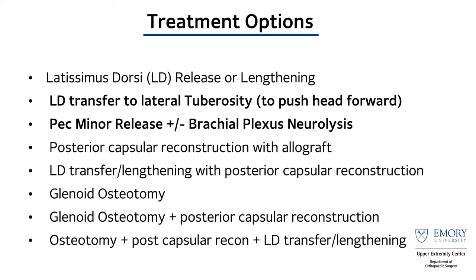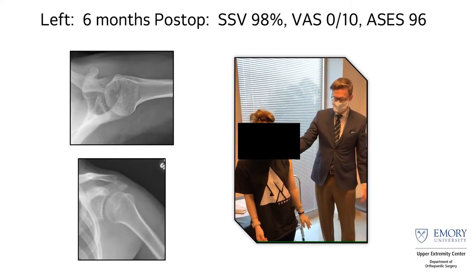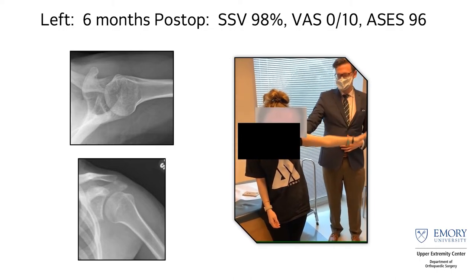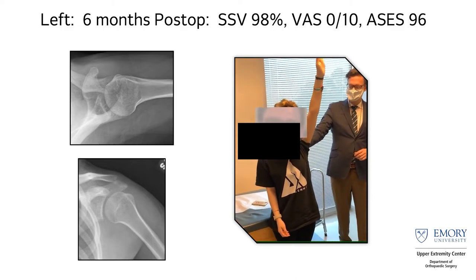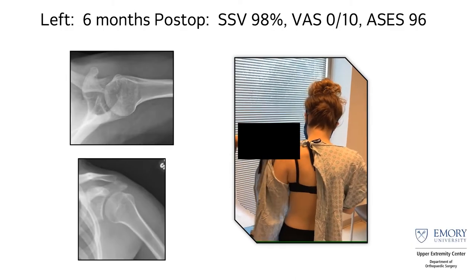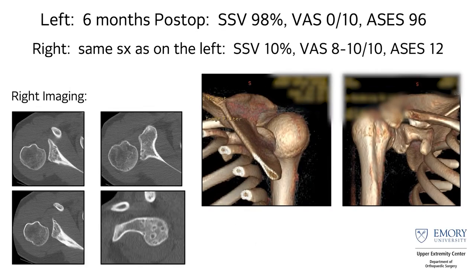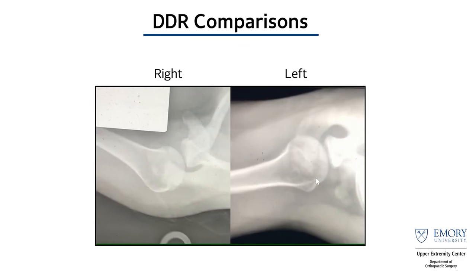Because of her latissimus spasm and scapular dyskinesia — and this is not the focus of this talk — we did a latissimus transfer to her greater tuberosity and a pec minor release. We were able to recenter her humeral head and gave her pretty good overall function. Unfortunately, the same problem started happening on the right side, and she had basically the same imaging: posterior decentering and inability to move her shoulder.